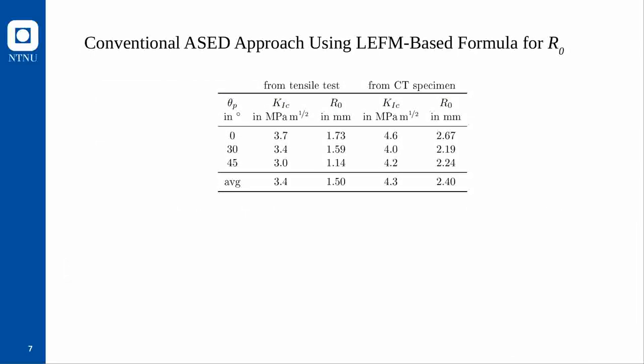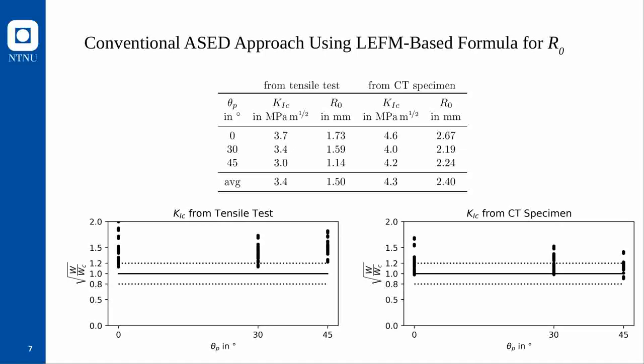For the ASED criterion we need the material length scale R0, obtainable from fracture toughness via a formula based on linear elastic fracture mechanics. However, Ahmed and Susmel presented two sets of fracture toughnesses — one from tensile specimens and one from CT specimens — and these differed quite substantially. With either set, the ASED criterion accuracy was very low. The scatter, visible in the analogous plot (with a square root since energy is quadratic in stress), was large and almost entirely on the conservative side — the error is not centered around zero.